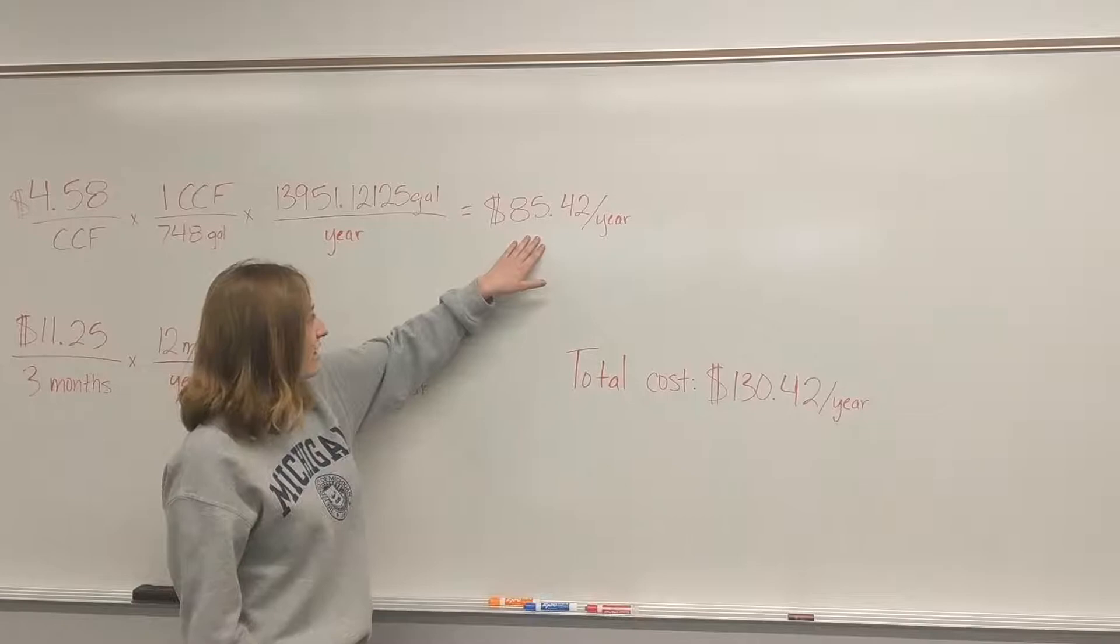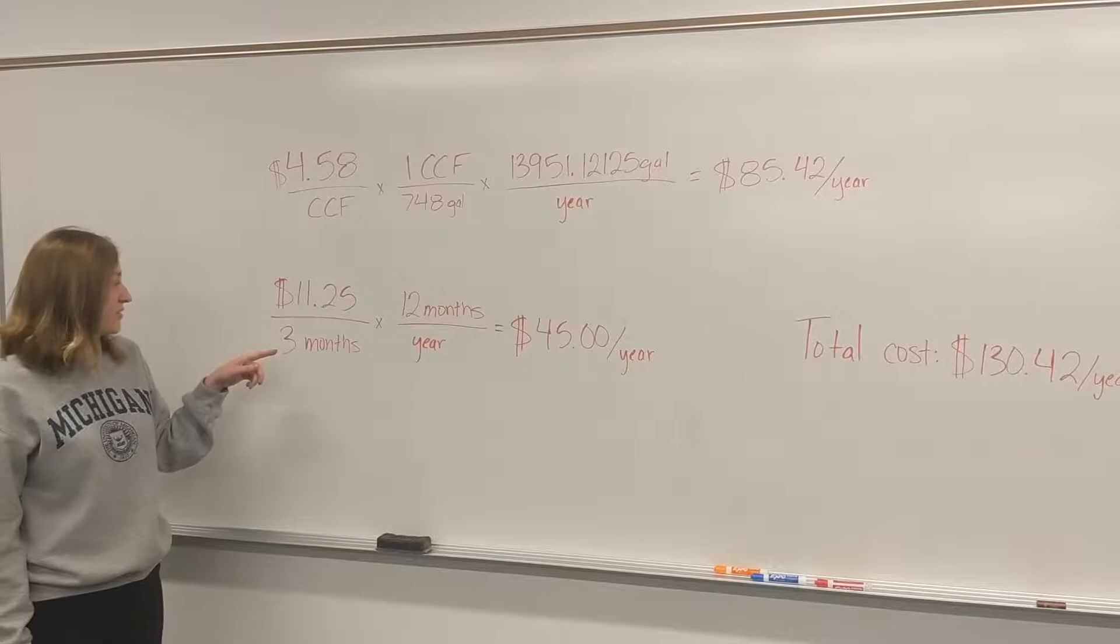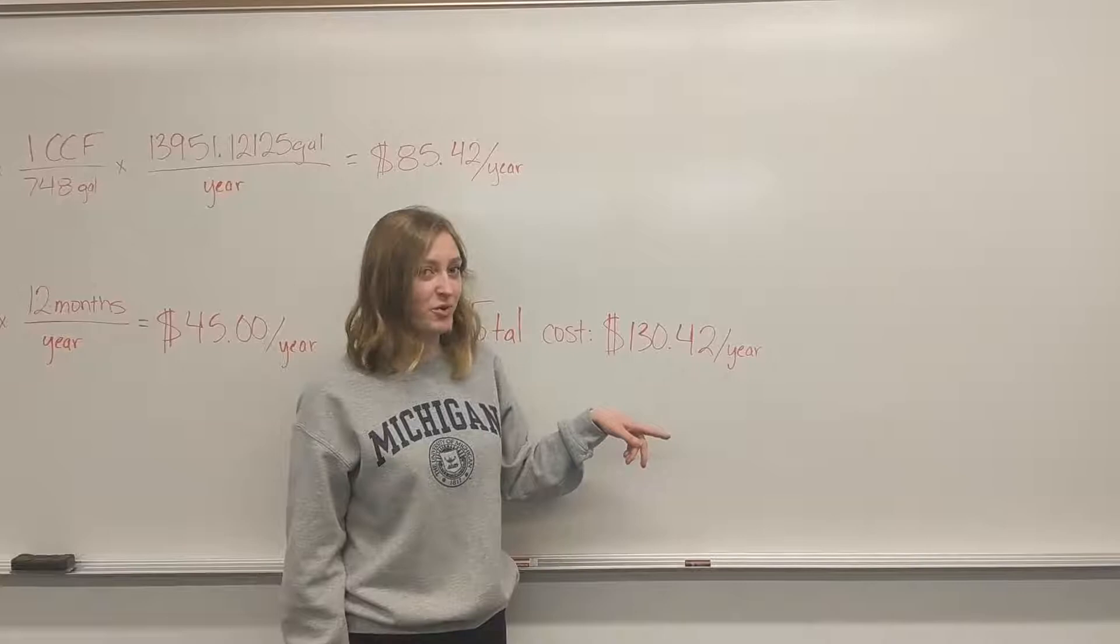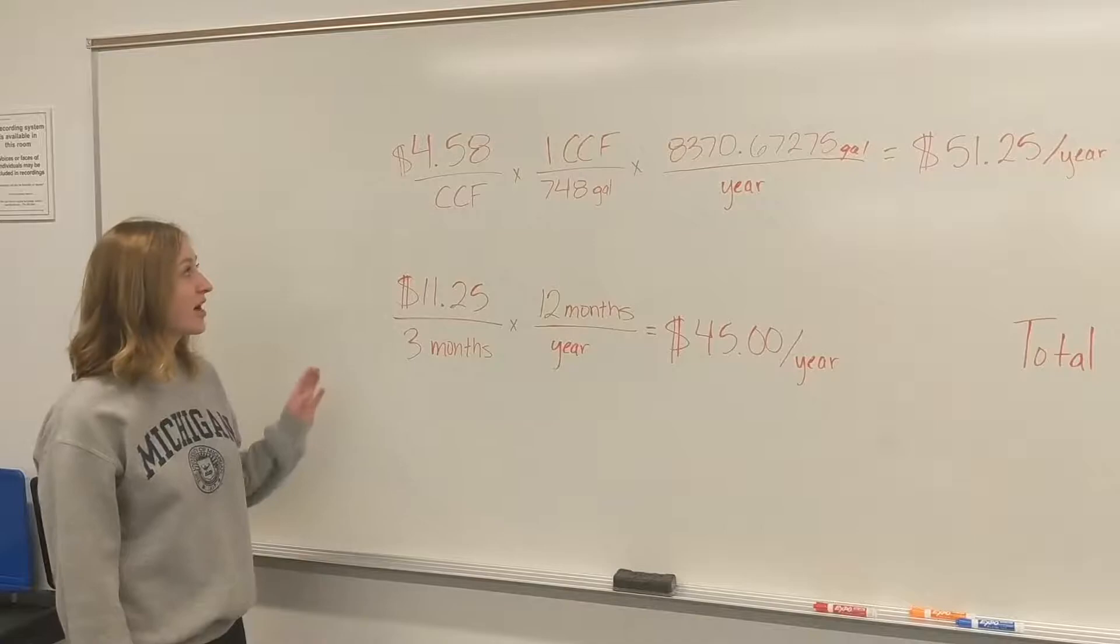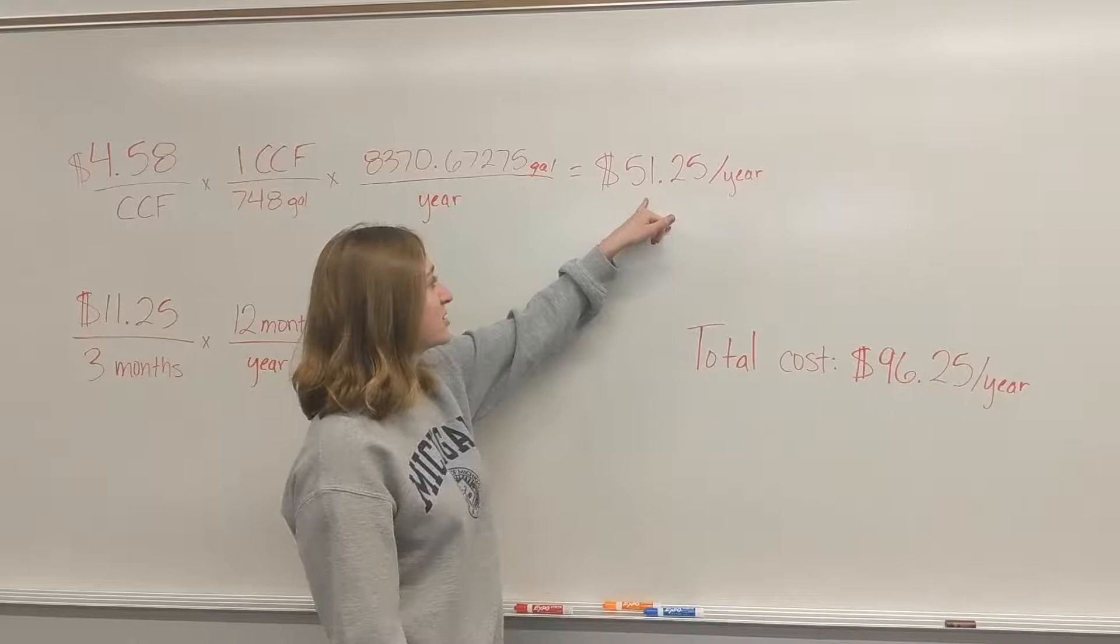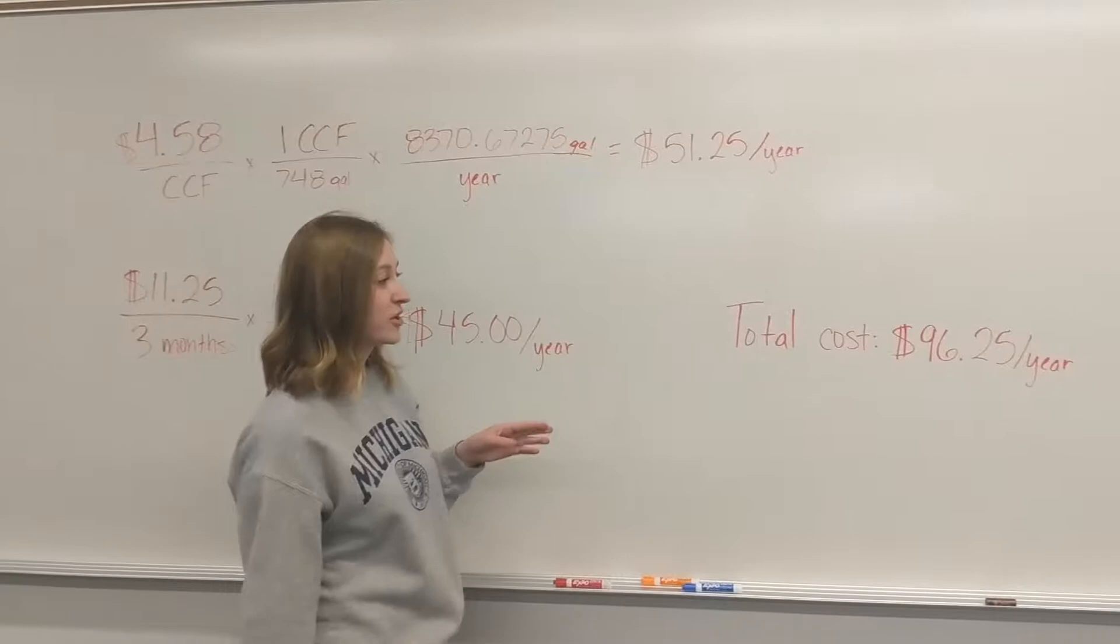They also charge a customer charge of $11.25 per quarter. There's four quarters in a year, and that adds an additional $45 per year. So the total cost for the standard shower head is $130.42 per year per student. Okay, now for the energy efficient shower head, the calculations are all the same, except every student uses 8,370.67 gallons per year, which is a little bit less. So their cost for the service fee comes to $51.25 per year, and the customer charge stays exactly the same. So their total cost per year per student is $96.25.